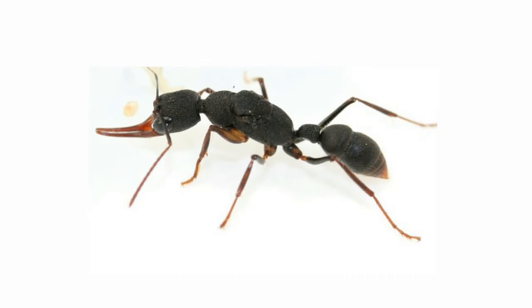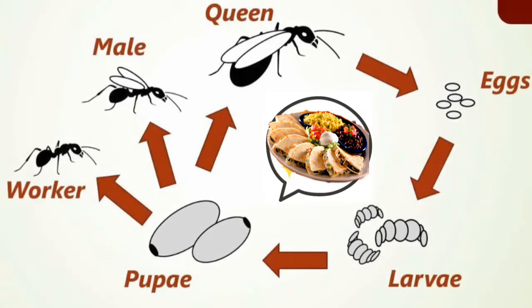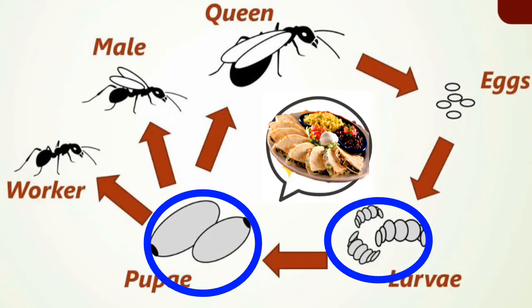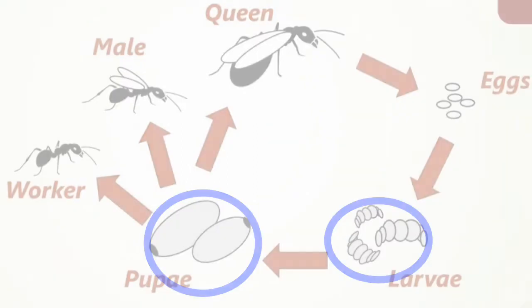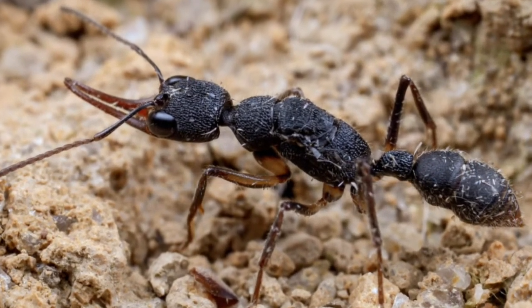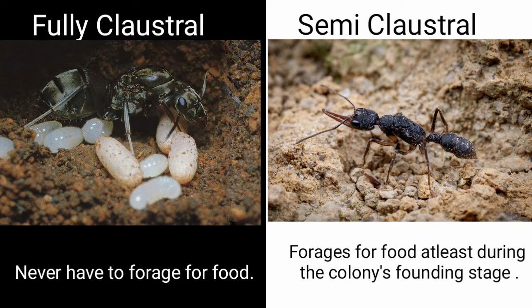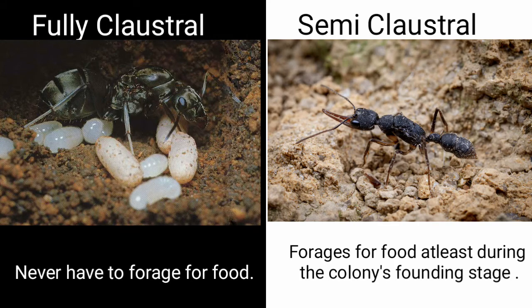In the case of a semi claustral queen, their wing muscles and food reserves are small and don't have enough food stored in them. By the time the brood reaches its pupal or larval stage, their stored food gets completely depleted, and the queen needs to forage for food for herself as well as her growing brood. So unlike a fully claustral queen, a semi claustral queen has to forage for food at least during the founding stage.